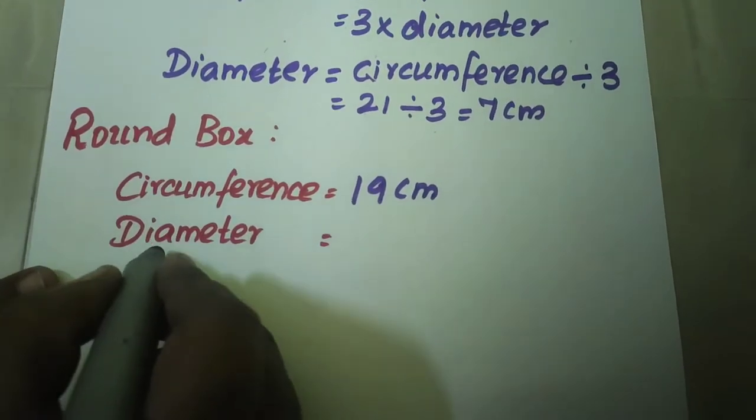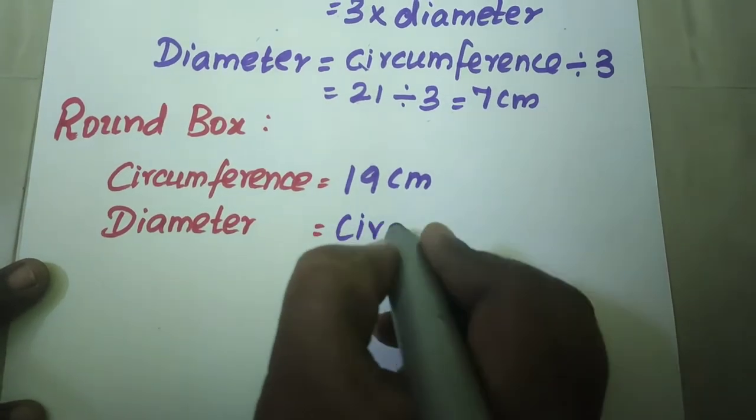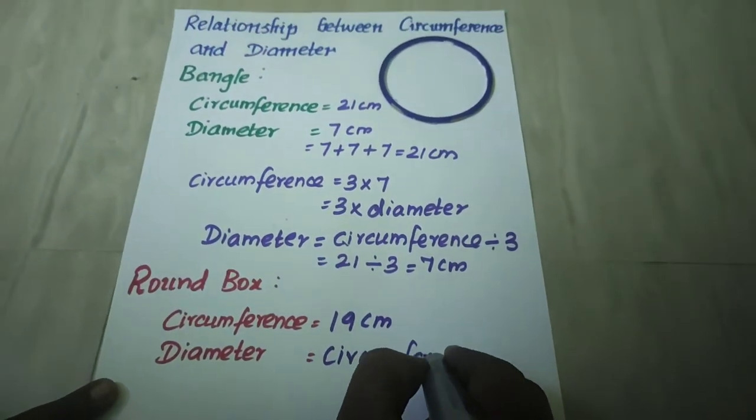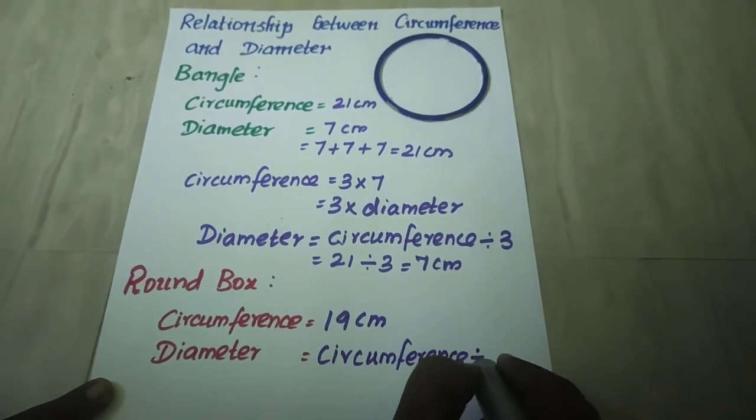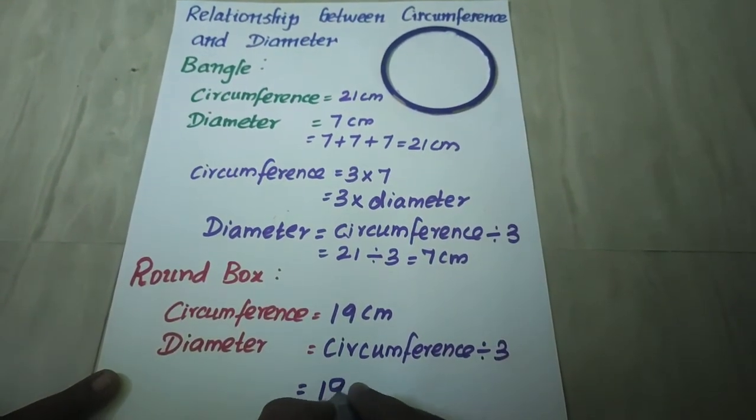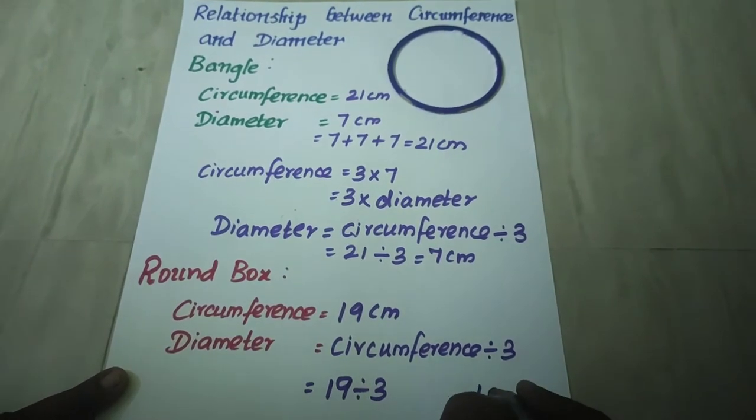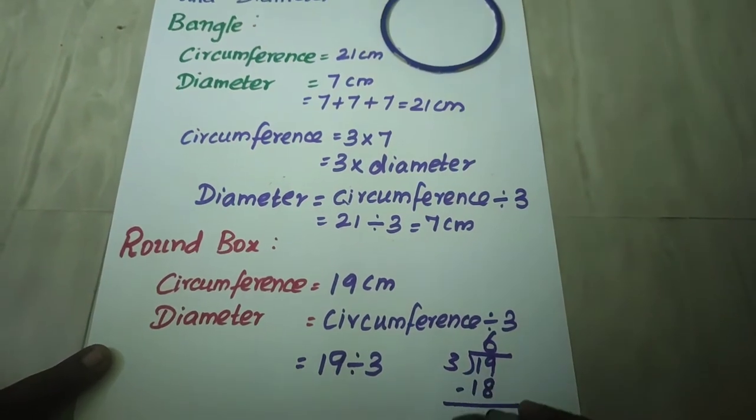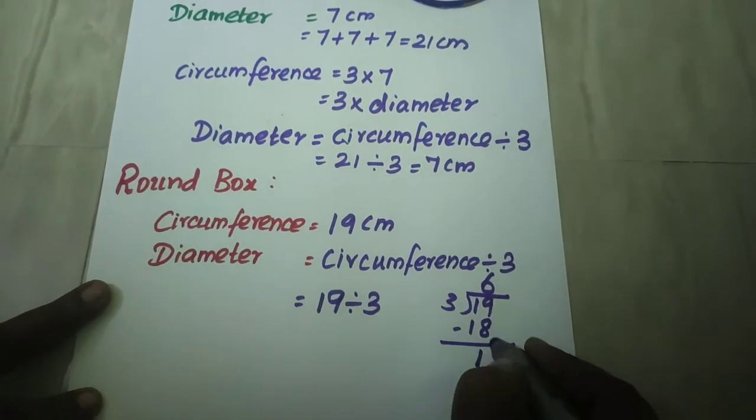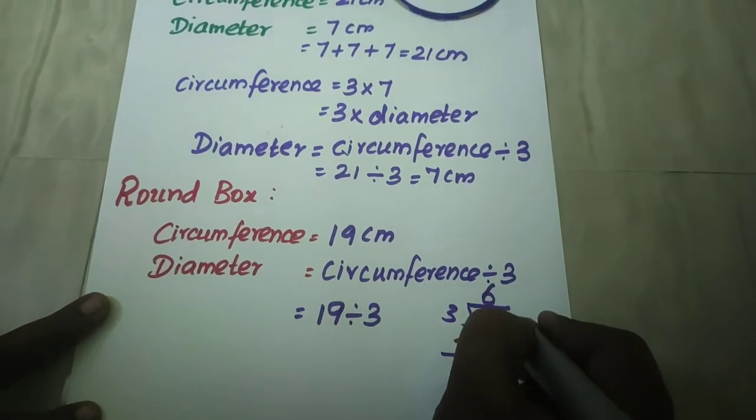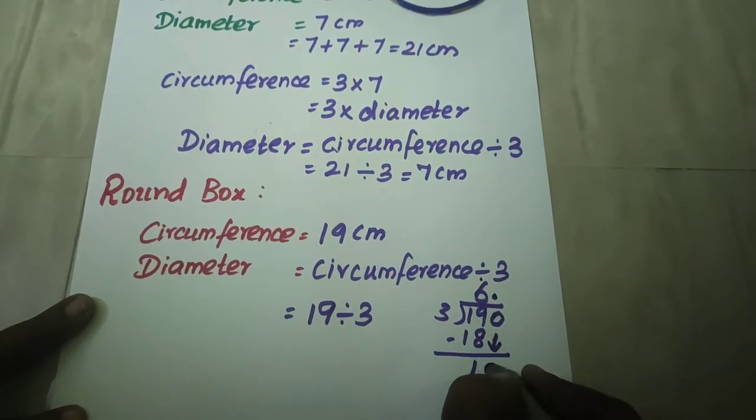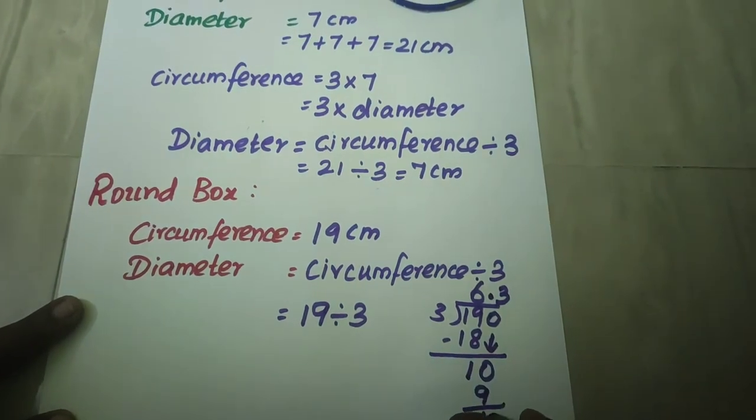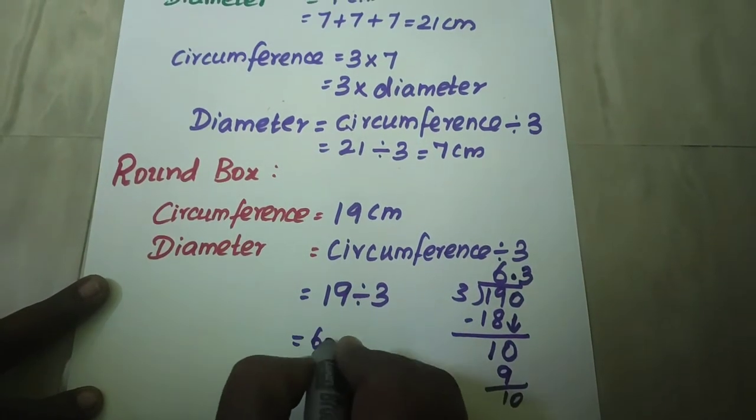Now if you want to find the diameter, what is the formula? Already we have found out. Circumference divided by 3, that is equal to 19 divided by 3. If you divide 19 by 3, you see 6 threes are 18. Here remaining is 1. And if I add 0, here I will be putting a point. That 0 you have to bring down. 3 threes are 9. So it goes on. That is 6 point 3 something.